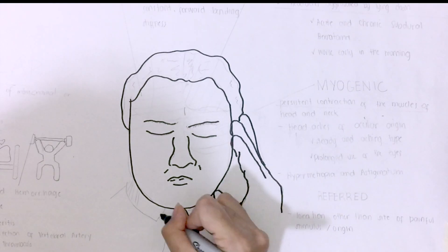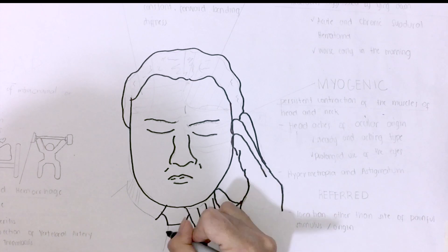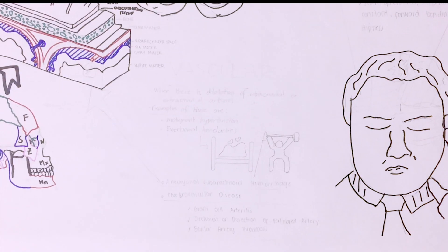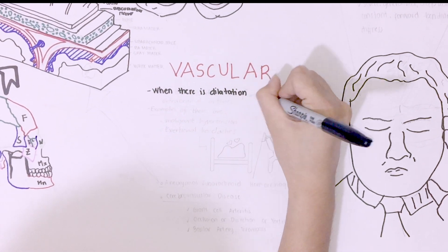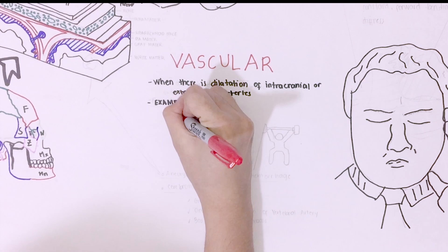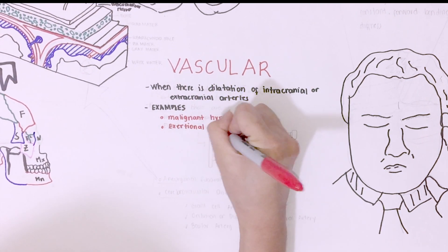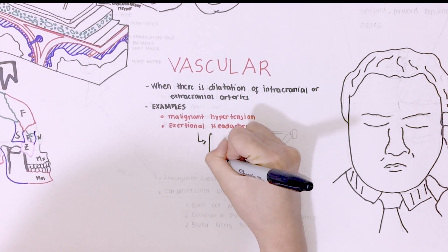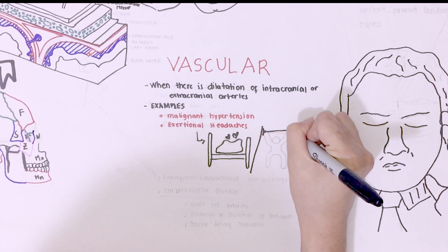So what are the mechanisms behind the pain? There are five mechanisms on how the pain occurs. Vascular is when there is dilatation of intracranial or extracranial arteries. Examples of these are in malignant hypertension, also in exertional headaches that happen during sexual activity or weight lifting.